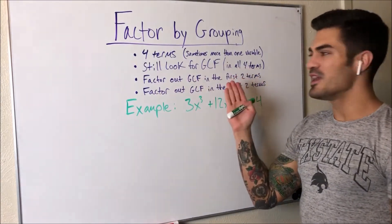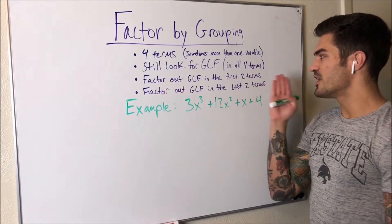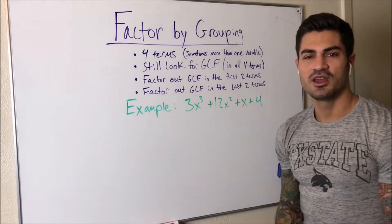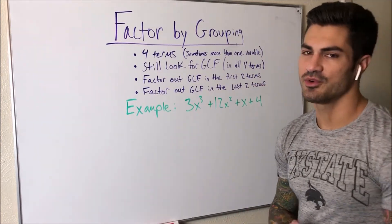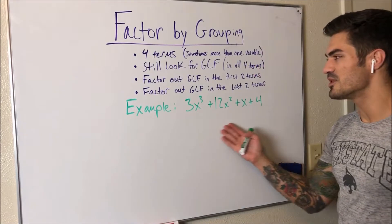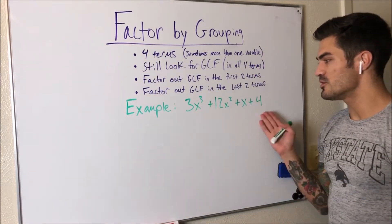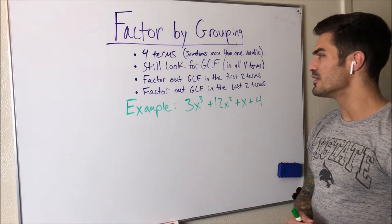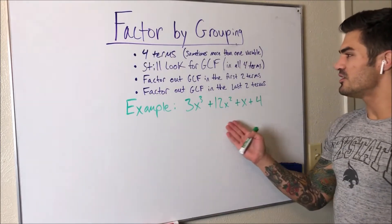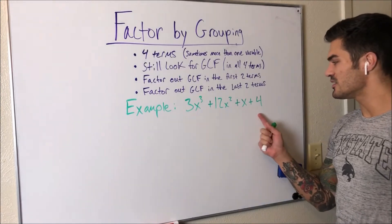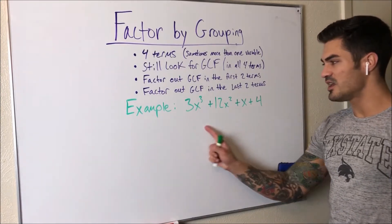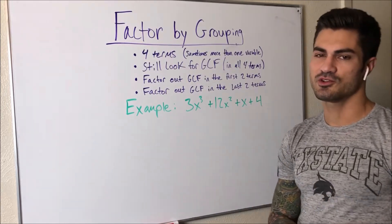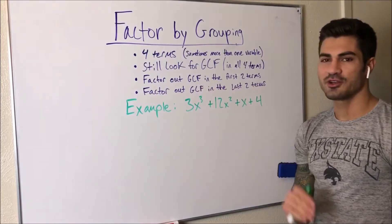We're still going to look for the greatest common factor in all four terms — if we can pull out a two, a three, a six — whatever we can pull out of all four terms, it will make the rest of the factoring easier. Once we do that, or if we can't, we factor out the greatest common factor in the first two terms and the greatest common factor in the last two terms, and then we can complete the factoring process.